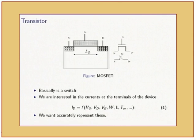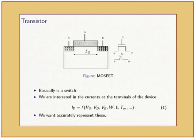This is a cartoon of a MOSFET. Basically it is a switch. The voltage on the gate controls the switch between the drain and source terminals. By applying a voltage on the gate, you can turn the switch off or on. We are interested in simulations involving thousands of these transistors. We need a representation of the current in terms of the terminal voltages and other physical parameters of the device, like the length of the device or the thickness of the gate oxide. We want to represent these terminal currents very accurately.